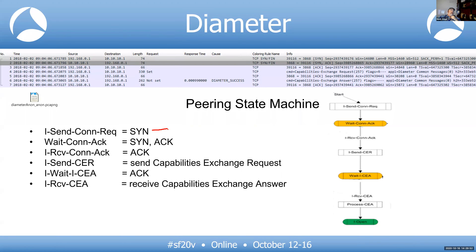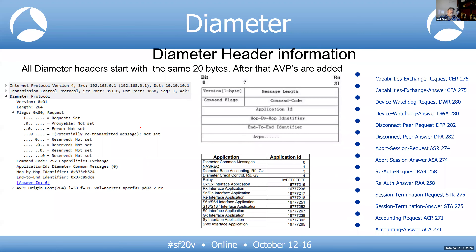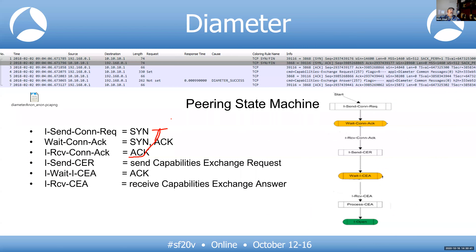Once the peering state machine completes, you enter the Diameter exchange where the client sends its capabilities to the server and the server acknowledges which capabilities it supports. Diameter can use either TCP or SCTP as the underlying layer 4 protocol.